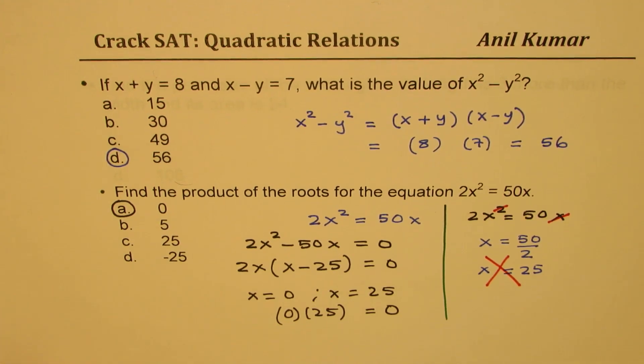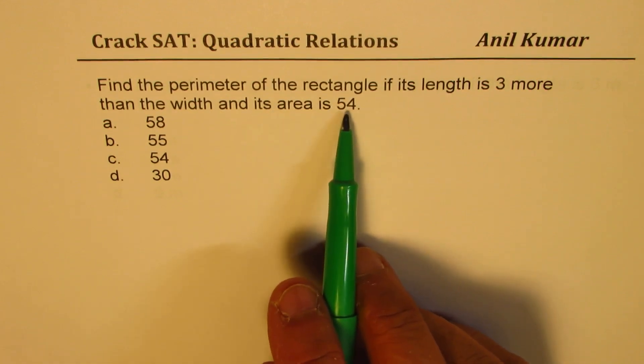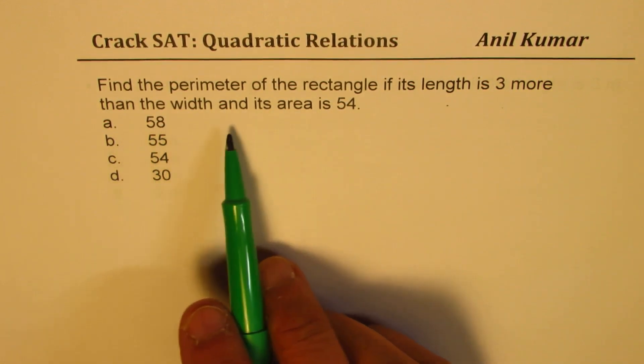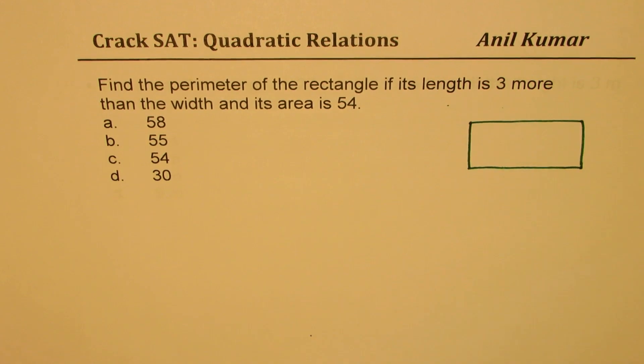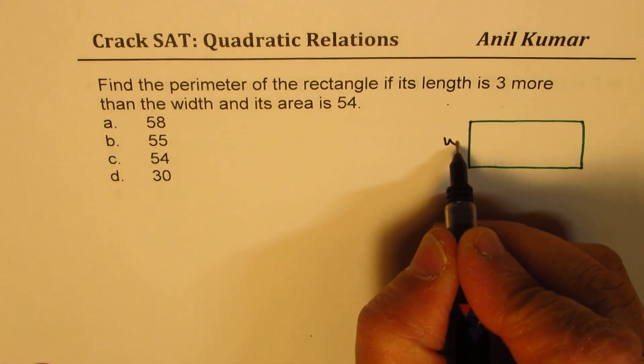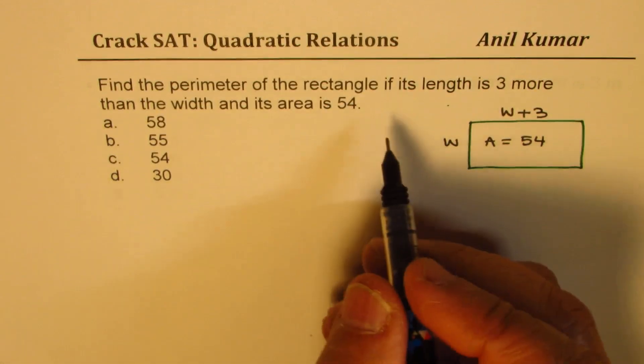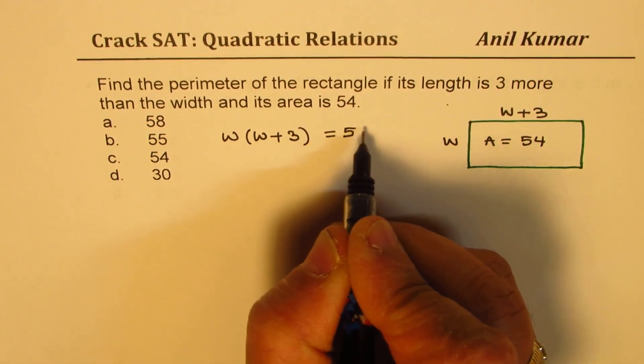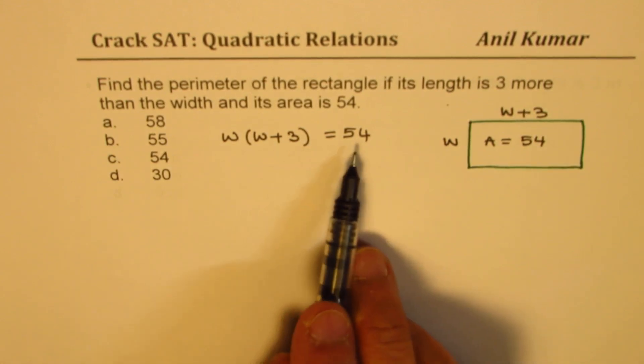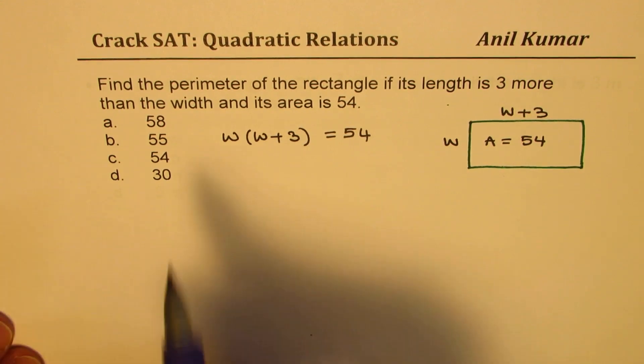The third question here is: Find the perimeter of the rectangle if its length is 3 more than the width and its area is 54. So if you consider a rectangle with length 3 more than the width, let width be w, length is going to be w plus 3. We are given area of 54. Now the equation definitely becomes w times w plus 3 equals 54. So what you see here is that product of two numbers is 54.